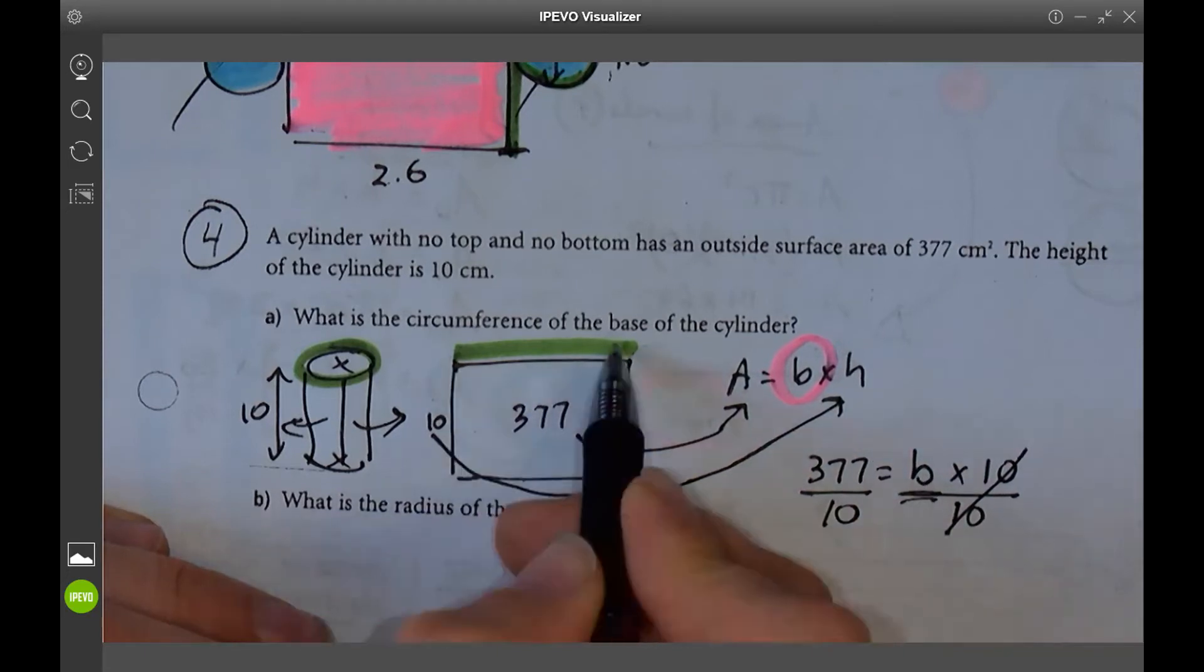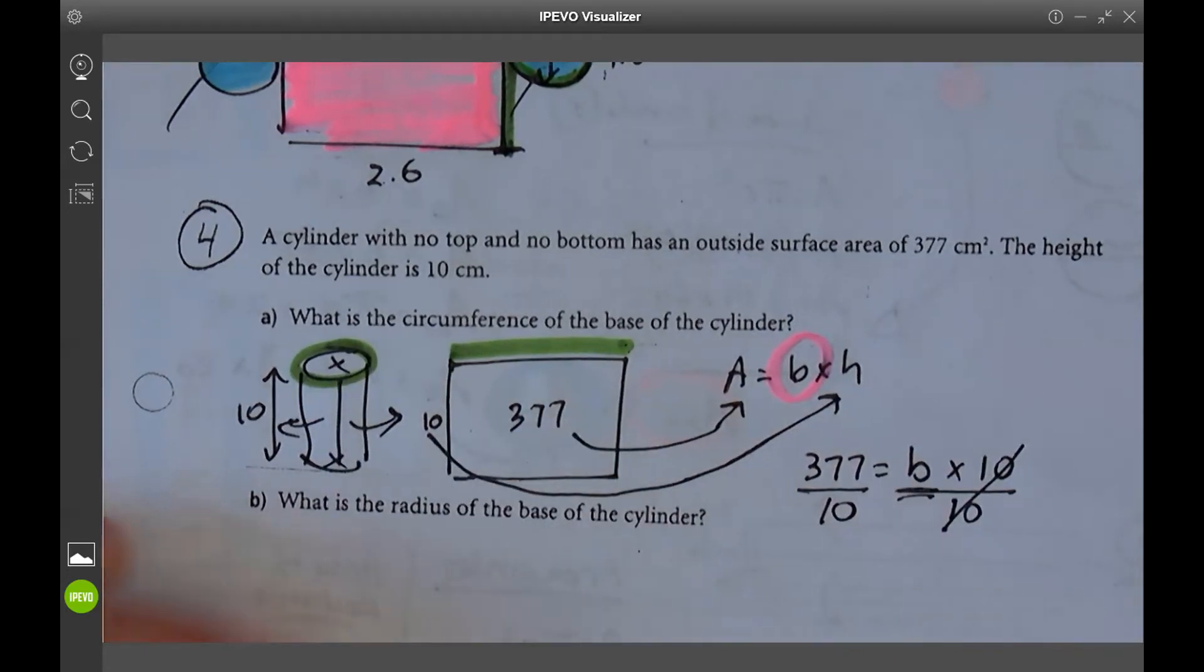B, the circumference, is this area right here. Hopefully that made sense.